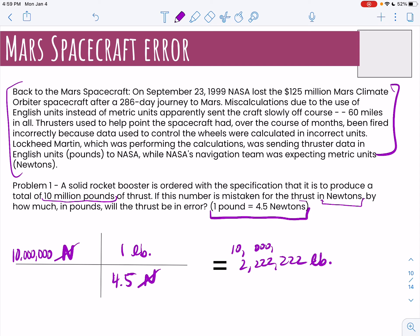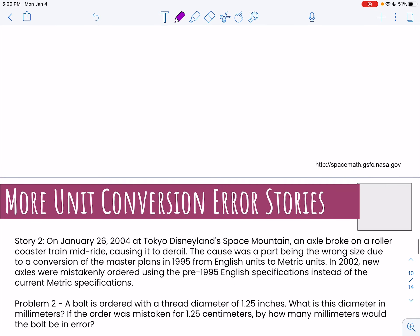So they're actually off by, if I subtract those, 10 million minus answer, we're off by like 7,777,778. So they're off by nearly 8 million pounds. So you think you're getting 10 million pounds but you're really only getting about 2 million pounds. Obviously you can see how that's going to cause a problem.